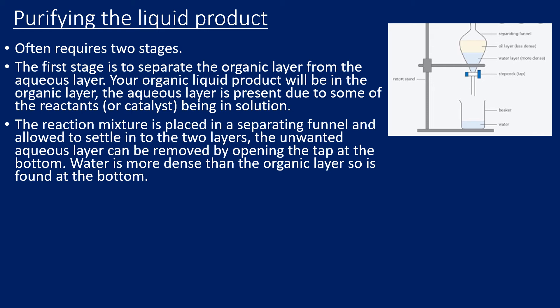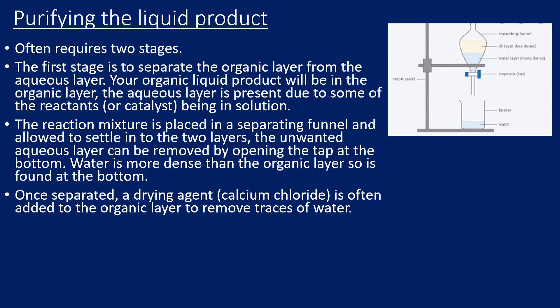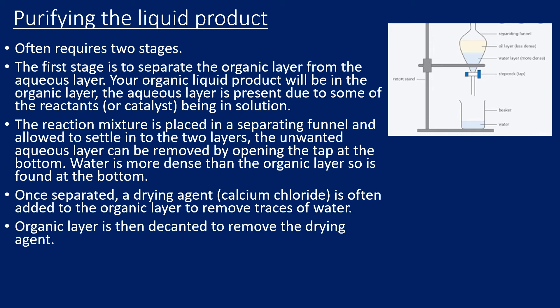At this point, we add a drying agent such as calcium chloride, because there will be traces of water within the organic layer. We add the calcium chloride to remove those traces of water. Once done, we can decant the organic layer off, leaving behind the calcium chloride. We now have a dry crude product.